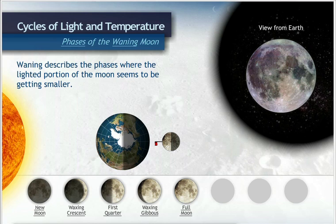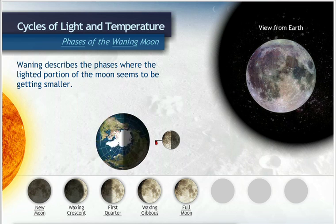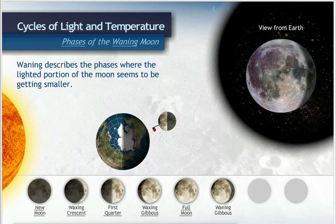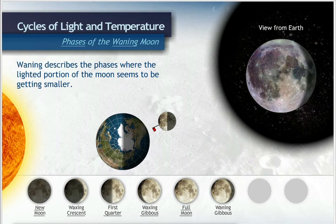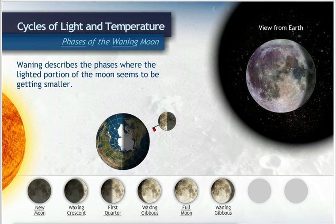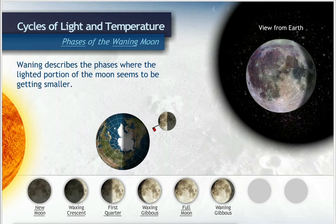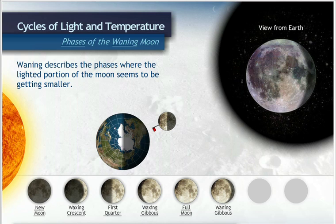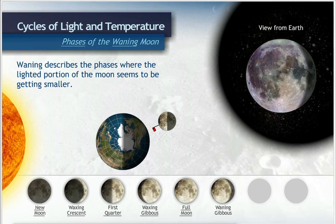The first phase of the moon after it is full is called waning gibbous. As with waxing gibbous, we can see more than half of the surface of the moon during the waning gibbous phase. However, notice that the portion of the waxing gibbous moon that is not visible is on the left, while on the waning gibbous moon, it is on the right.